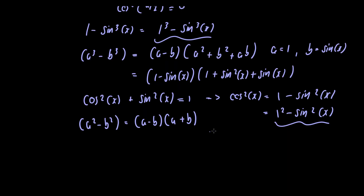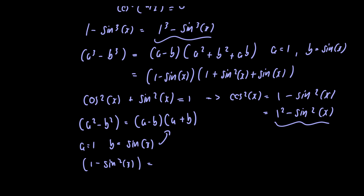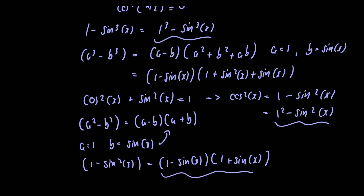Taking a equal to 1 and b equal to sine of x and plugging into the difference of squares formula, we get that cosine squared of x equals 1 minus sine of x multiplied by 1 plus sine of x. We then substitute this factored expression into our denominator.